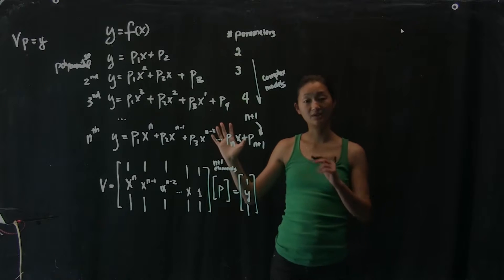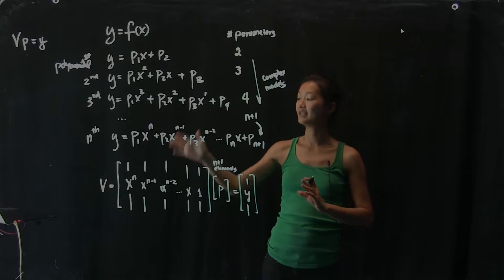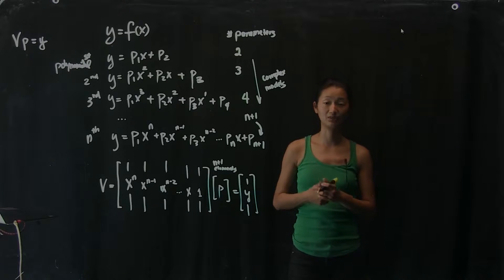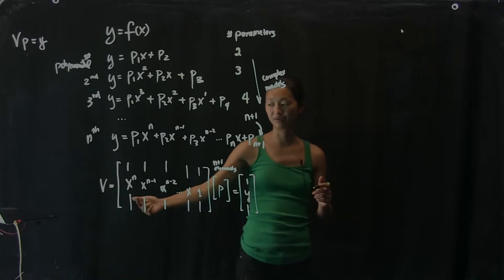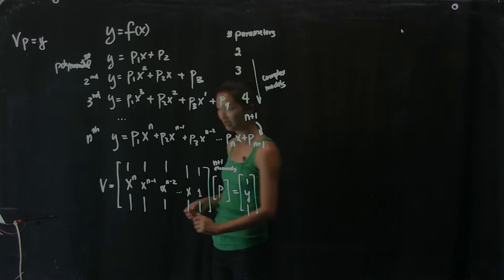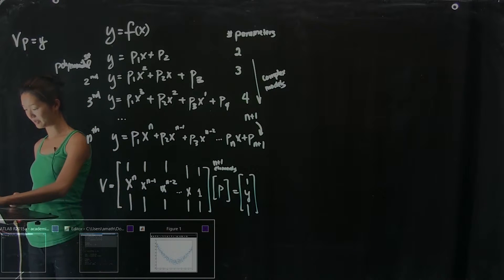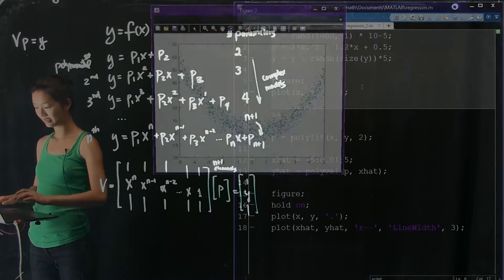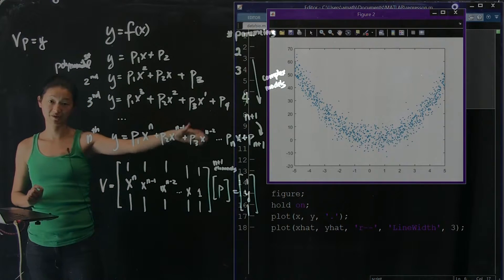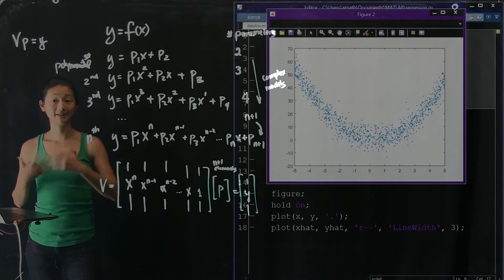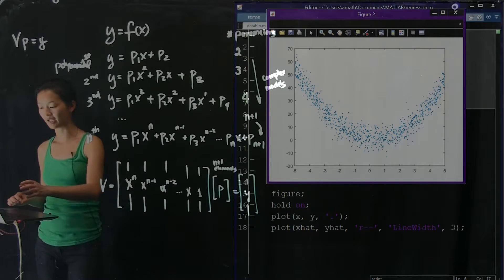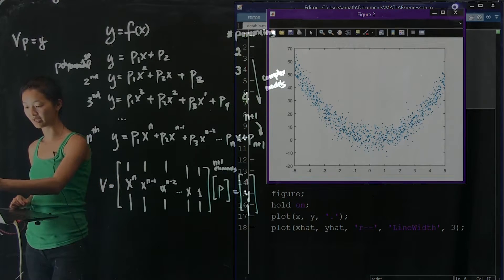As long as the model shape you're trying to fit is a polynomial, there's actually a built-in MATLAB command you can use to solve these problems. It's really convenient because it saves you from having to construct the V-matrix by hand every time. It's the polyfit command. Let's go back to the dataset we had before — it looks like a second-order polynomial — and I'll show you how to use polyfit instead of constructing the V-matrix by hand from these thousand data points.